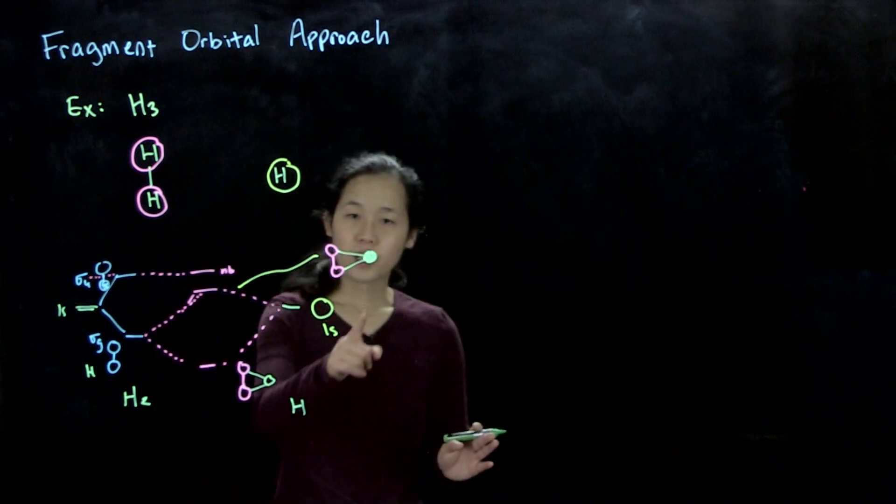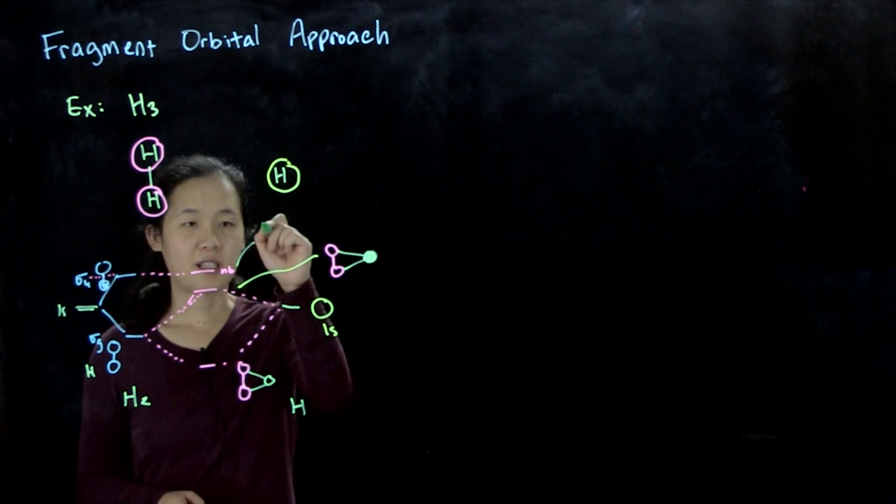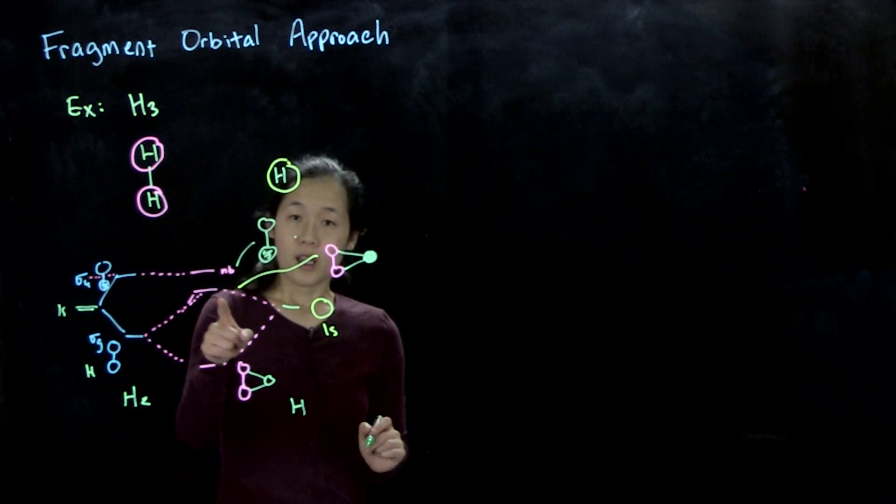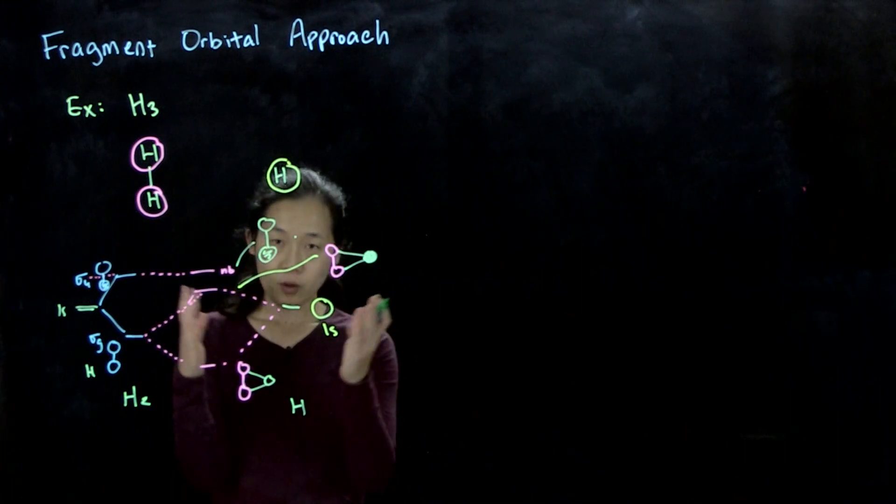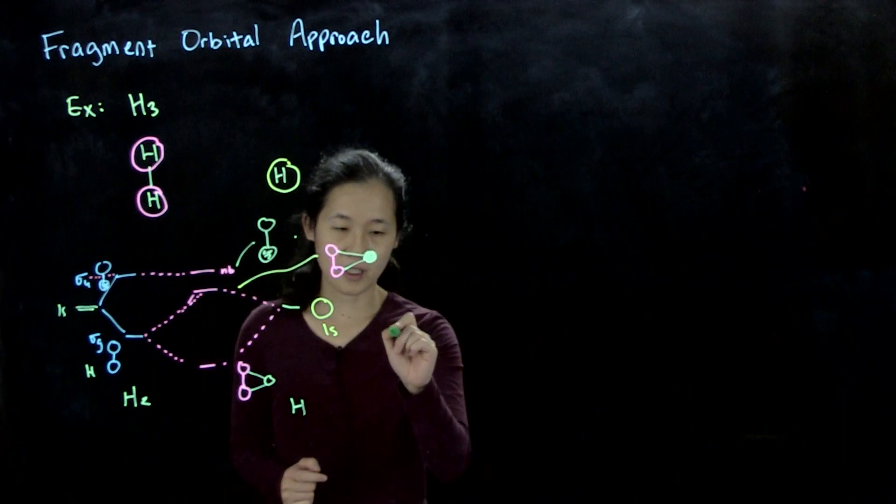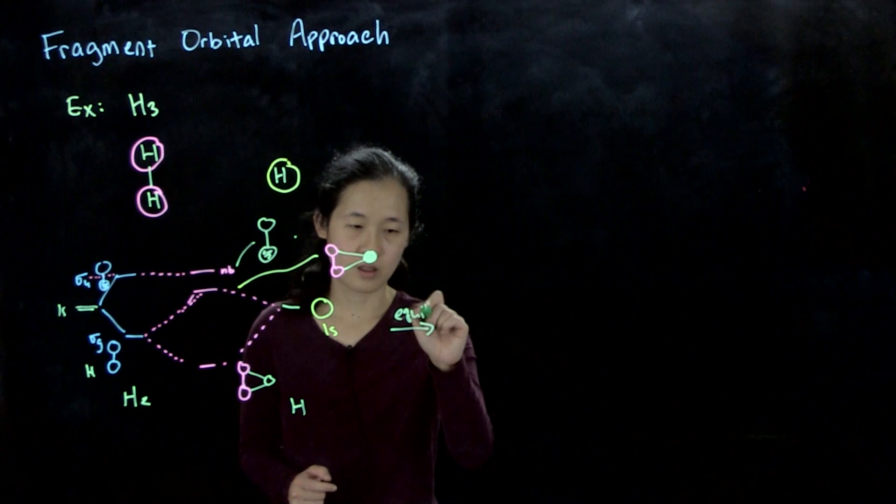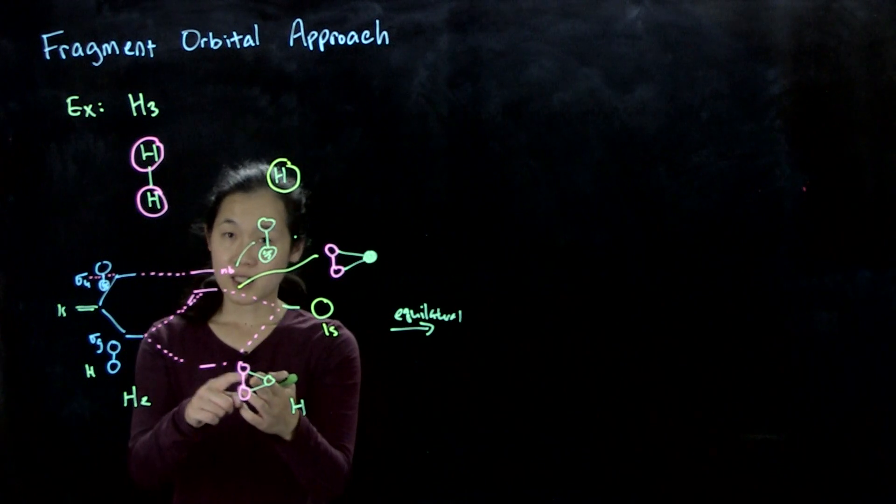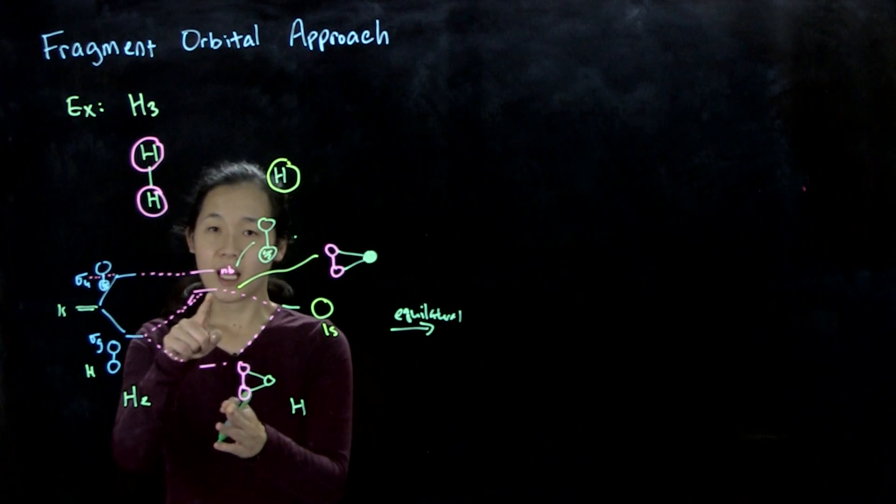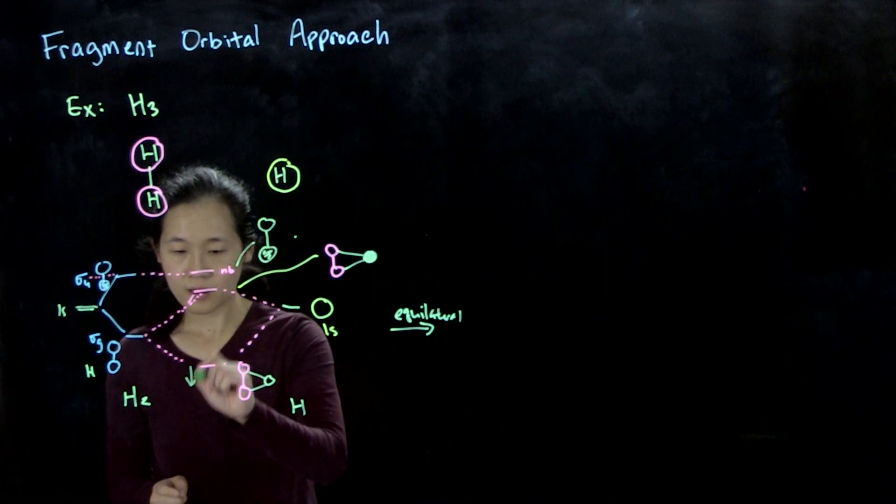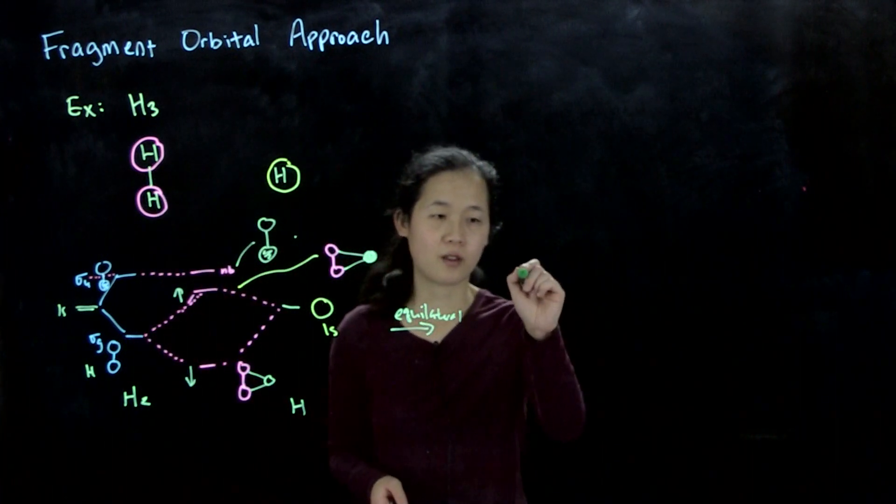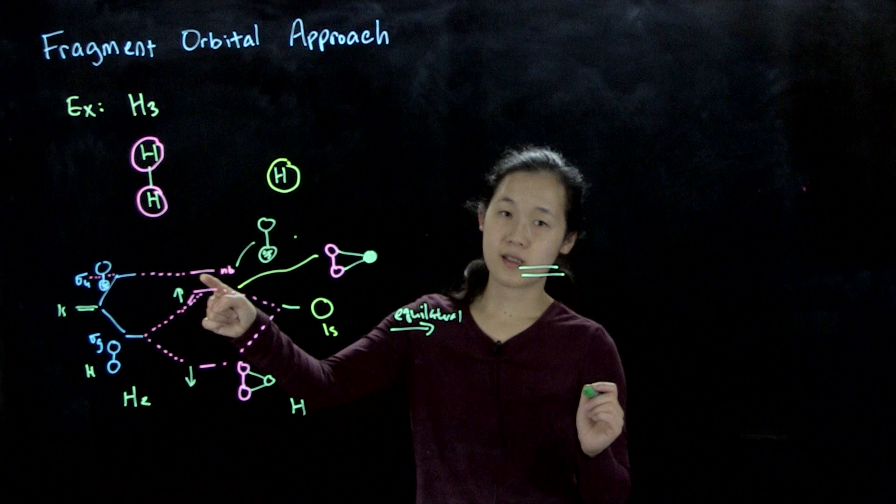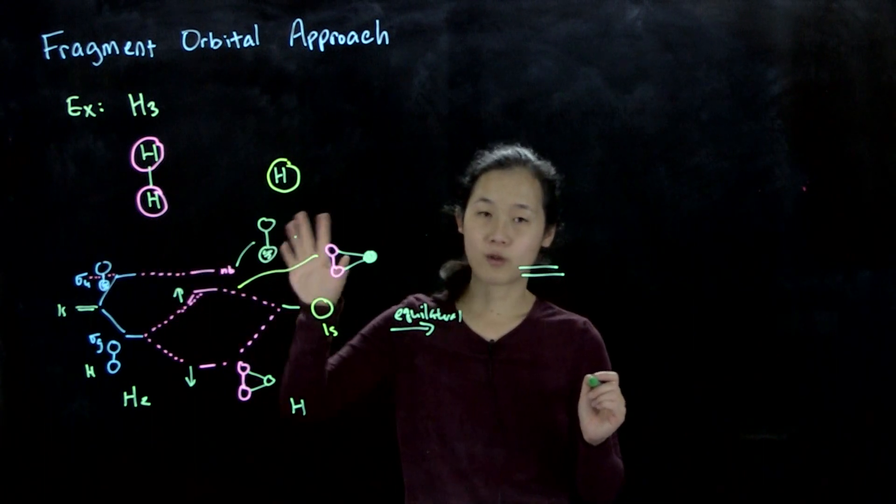And then this non-bonding orbital, keep in mind, looks like this. If we were to then actually make an equilateral triangle where these are the same, let's go to equilateral. Basically, as this hydrogen atom comes closer and closer, this overlap gets bigger. This bonding orbital becomes more stabilized. This anti-bonding orbital becomes more destabilized. This goes down, this goes up, until we finally get to this one, where they become—this anti-bonding orbital becomes degenerate with this originally sigma u derived orbital.